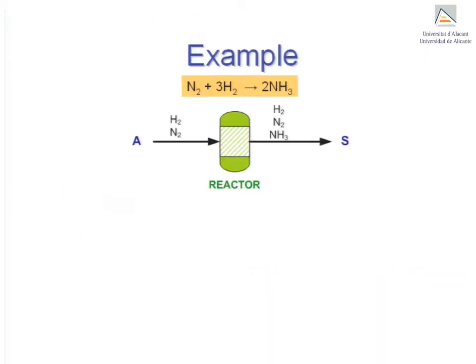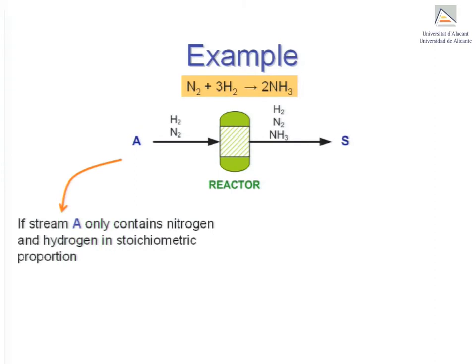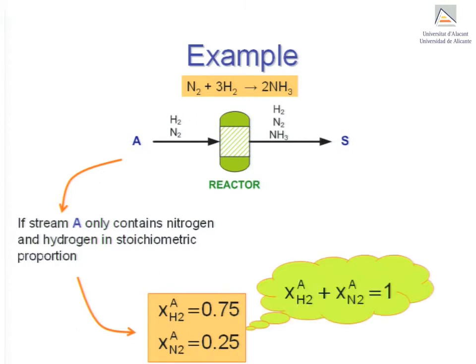We now go back to the nitrogen example because there is more to be said about it. If stream A consists of only nitrogen and hydrogen in stoichiometric proportion, that is, it contains no other substance, then we can immediately deduce that the molar fractions are 0.75 hydrogen and 0.25 nitrogen. This is so because the molar fractions of the components of a stream must always add up to 1.